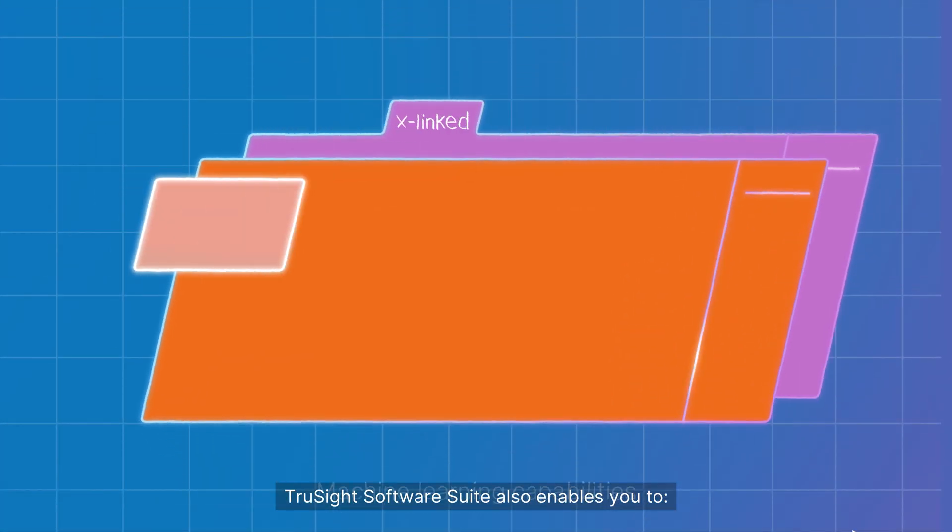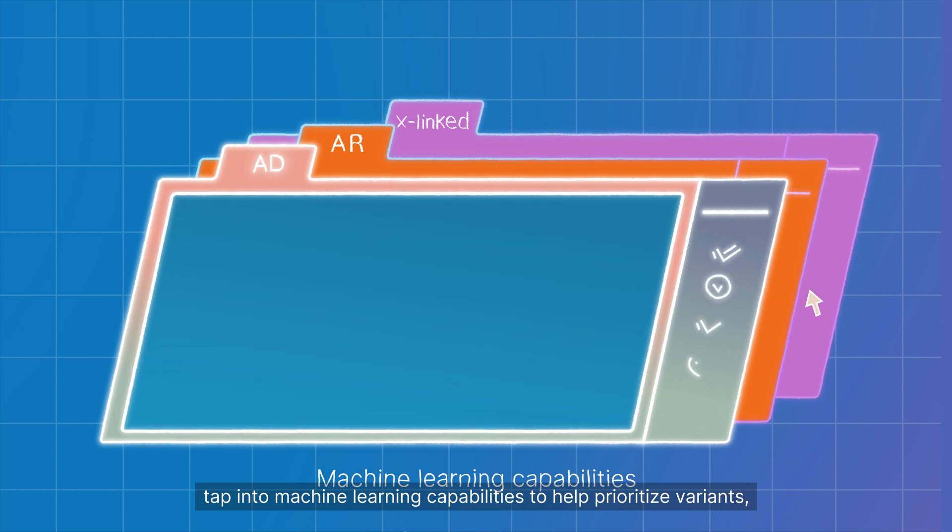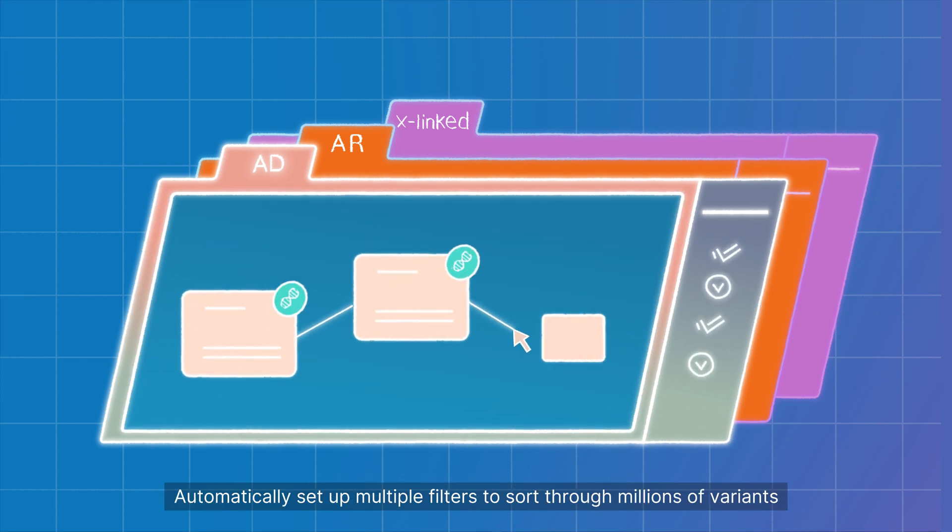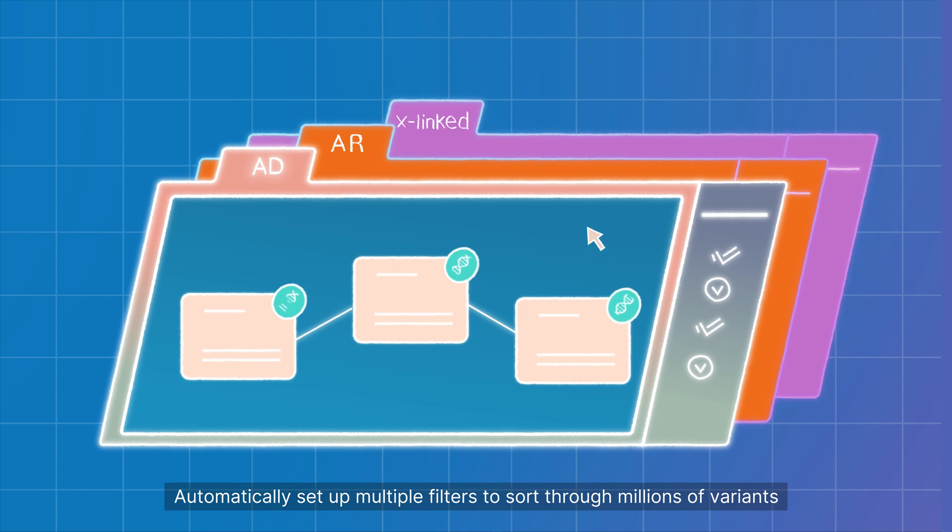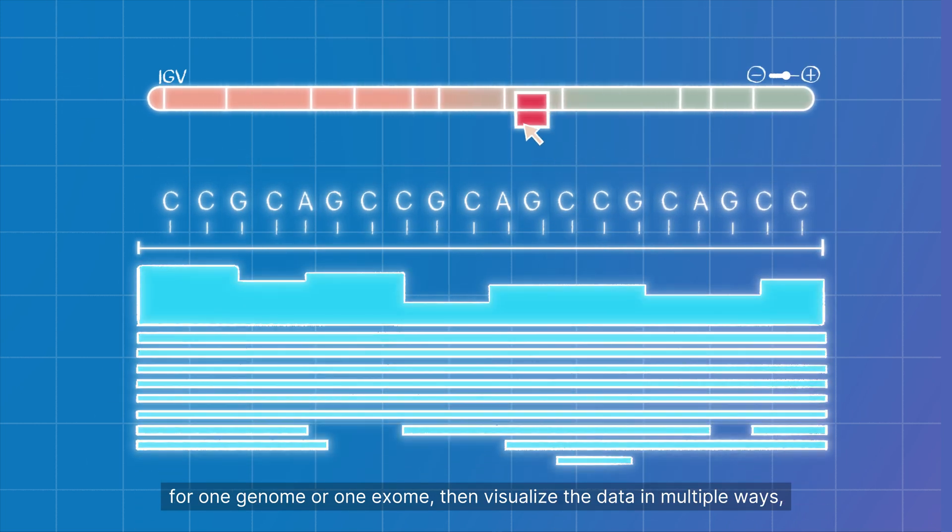TruSight Software Suite also enables you to tap into machine learning capabilities to help prioritize variants. Automatically set up multiple filters to sort through millions of variants for one genome or one exome.